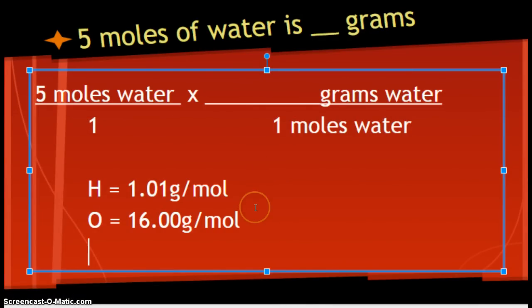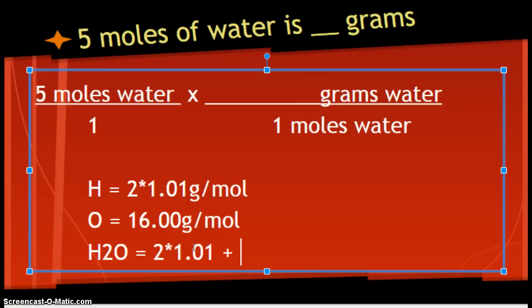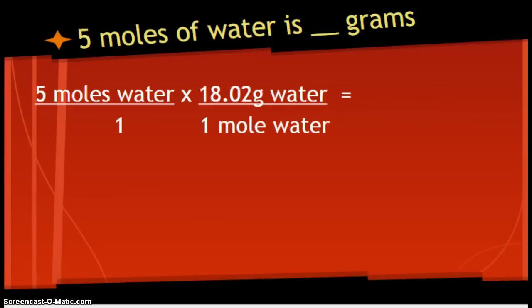Alright. Now, water is what formula? H2O. So, that means I have to do what? Times that by 2. Because, there's 2 hydrogens for every 1 oxygen. And, then, I add it up. So, 2 times 1.01 plus 16.00 gives me 18.02 grams of water. It's the same as 1 mole of water.